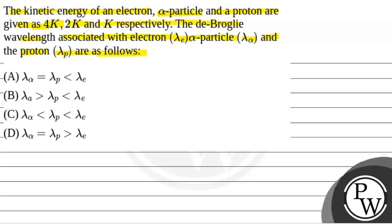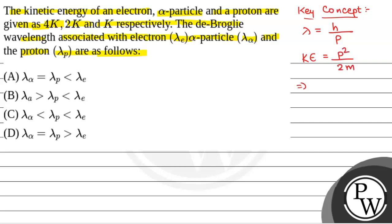We will solve this question. The key concept used will be: the de Broglie wavelength lambda is equal to H by P, where H is Planck's constant and P is the momentum. We know that kinetic energy is given by P squared by 2m, so P is equal to root over 2m into kinetic energy. Therefore, de Broglie wavelength lambda is equal to H by root over 2m into kinetic energy.